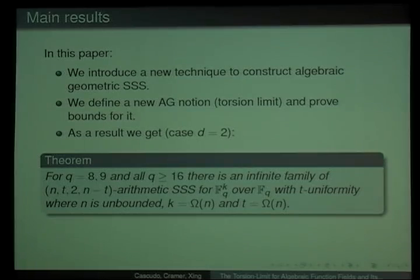So the main results of this paper: What we do in this paper is introduce a new technique to construct algebraic geometric schemes. In order to do that, we need to define a new algebraic geometric notion which we will call the torsion limit and seems to have application in other areas apart from cryptography. We will prove bounds for this notion and then we will get as an example of a result for the case d equals two.